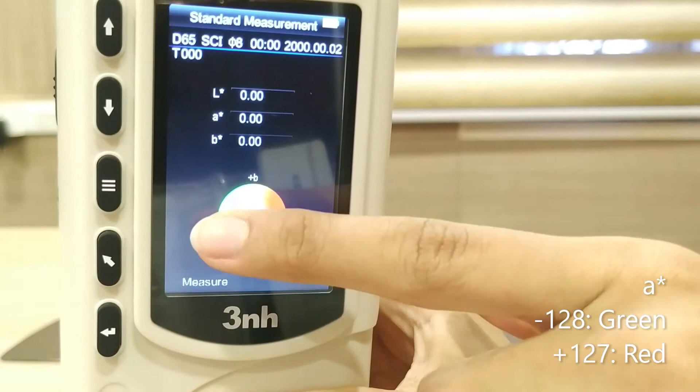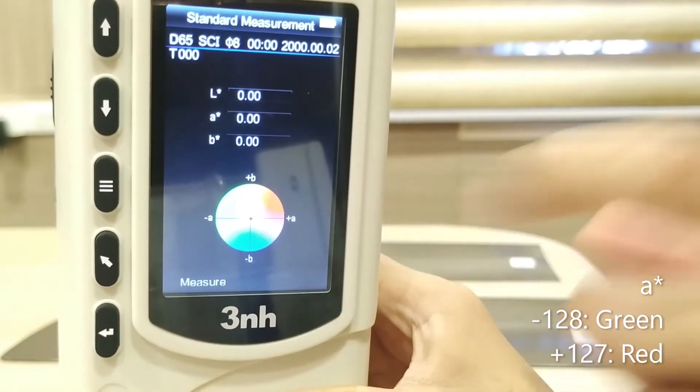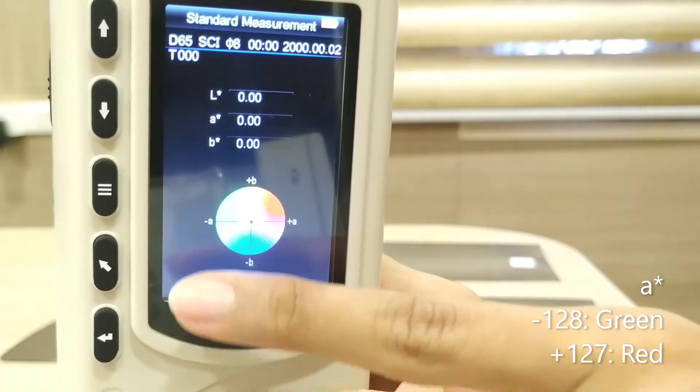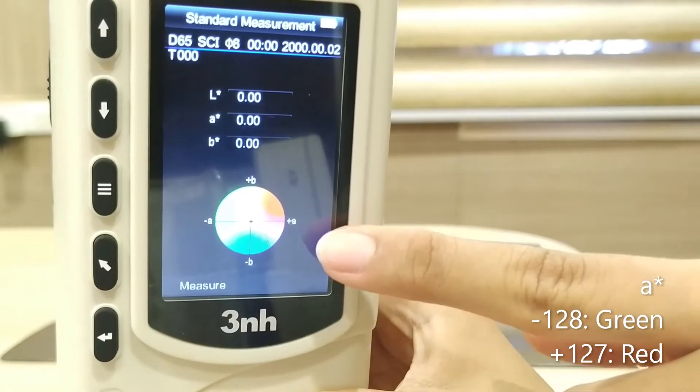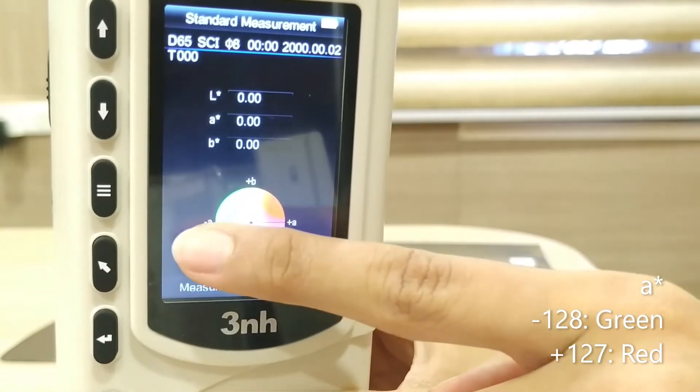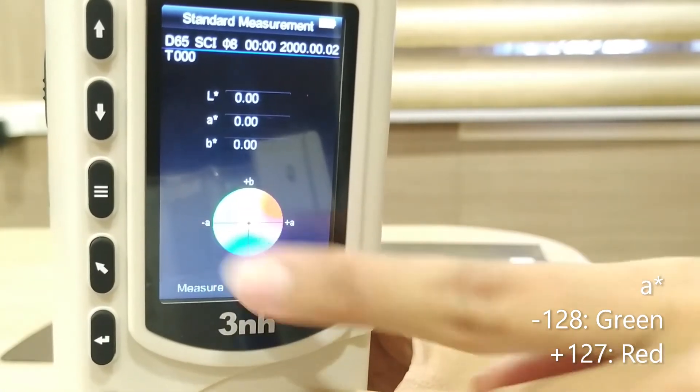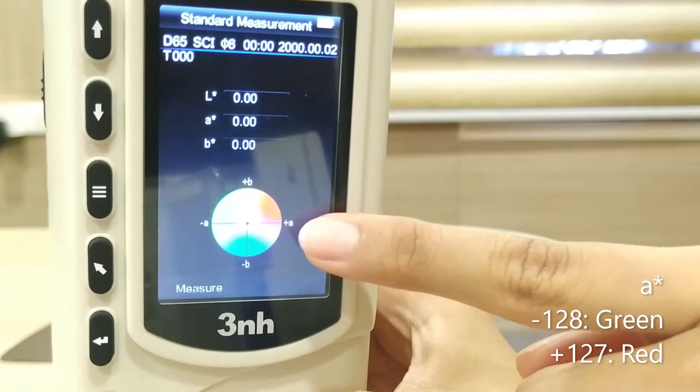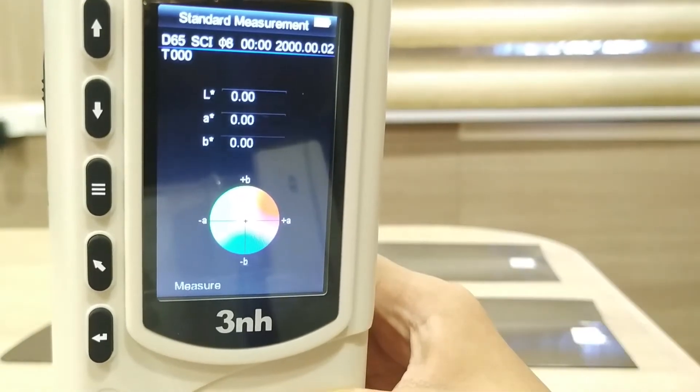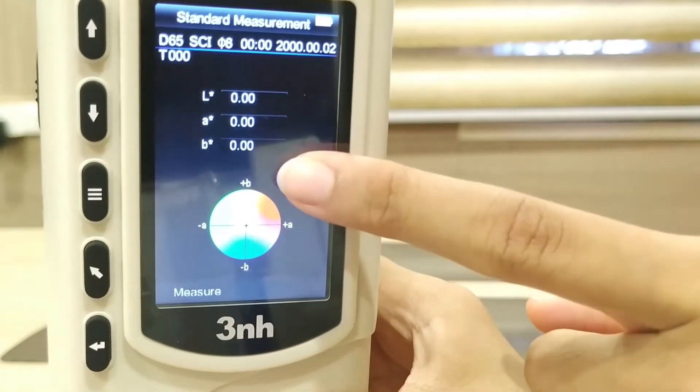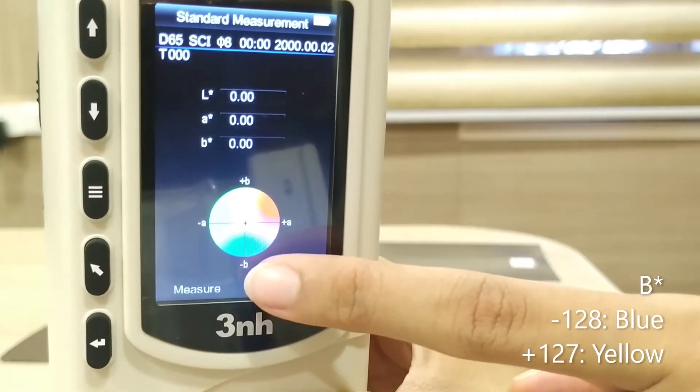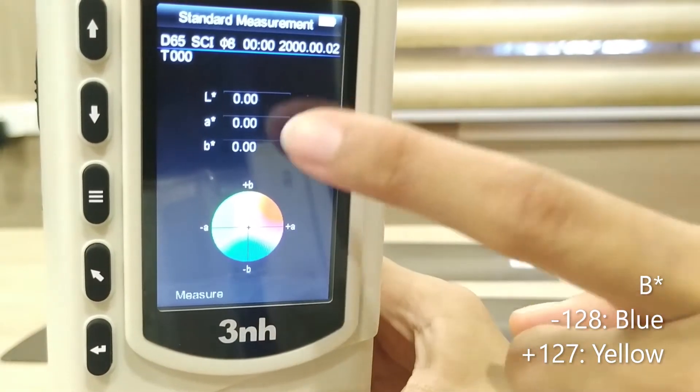A ranges from minus A to plus A, and the numerical value is minus 128 to plus 127. Negative values indicate green color and positive values indicate red color. In the same way, B ranges from minus B to plus B and the color ranges from blue to yellow.